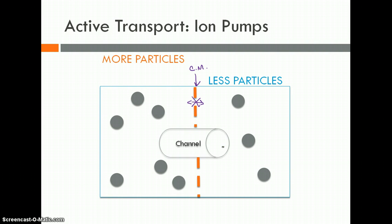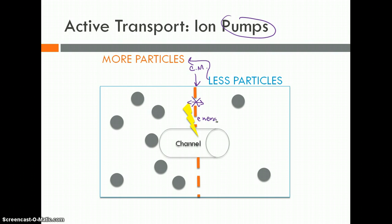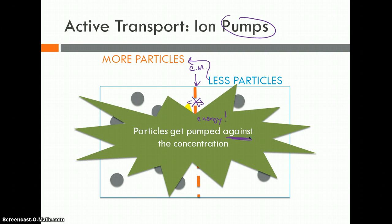If this were diffusion, these particles would go from left to right, down their concentration gradient. But this time we're pumping — going the opposite way, from where there aren't many particles uphill to where there are a lot. This is hard work; it's swimming upstream. The particles move from right to left through the channel. This requires a lightning bolt of energy — it takes a lot of work for the cell membrane to pump from low uphill to high, against the concentration flow.